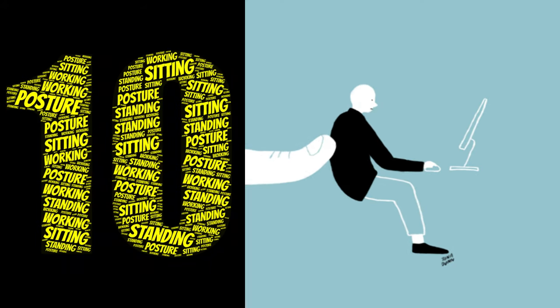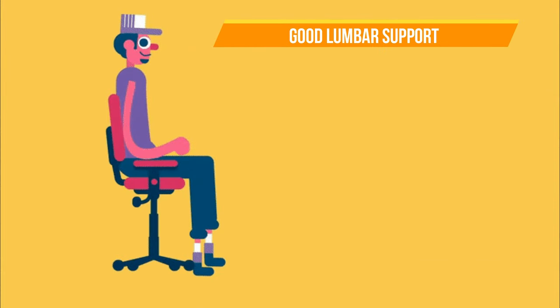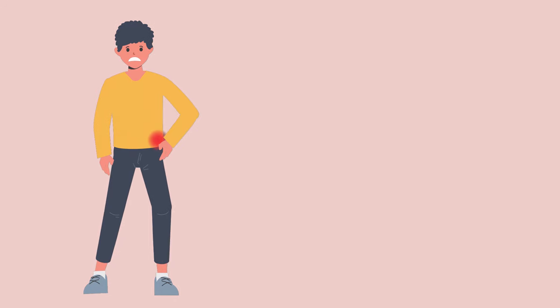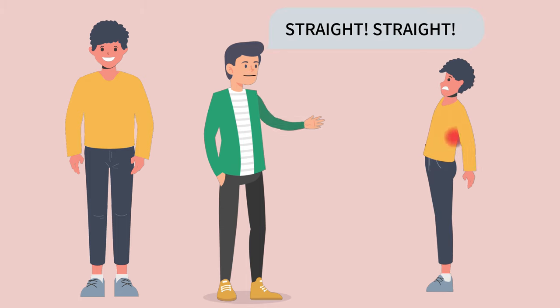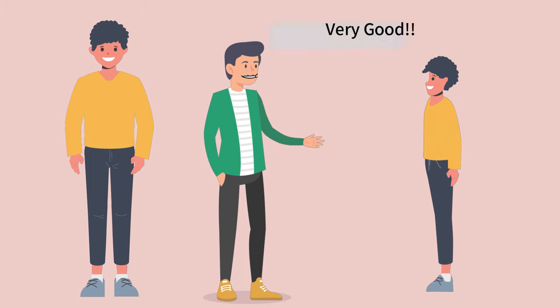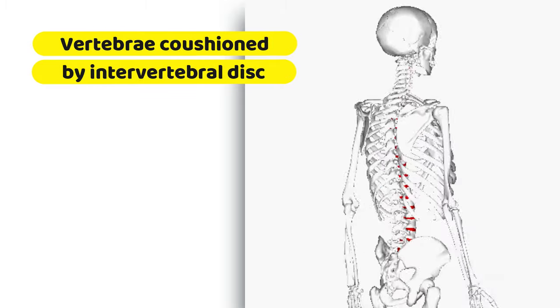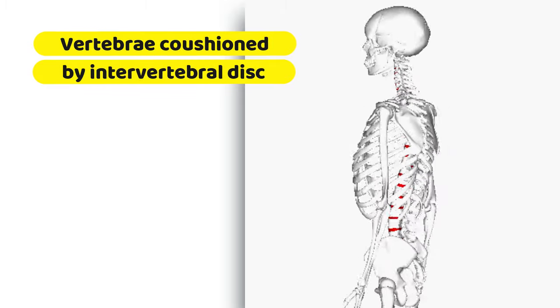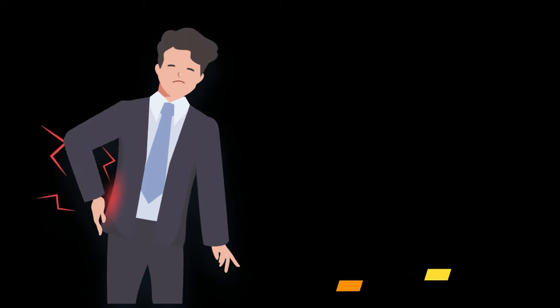Next is posture. Your back supports weight best when you don't slouch. This means sitting with good lumbar support for your lower back and shoulders. When standing, keep your weight evenly balanced on both feet. If you keep proper posture, you might be able to avoid back pain. Next is herniated disc. The vertebrae are cushioned by intervertebral discs that are prone to wear and tear from aging and injuries. A weakened disc may rupture or bulge, putting pressure on the spinal nerve roots. This is known as a herniated disc and it can cause intense pain.